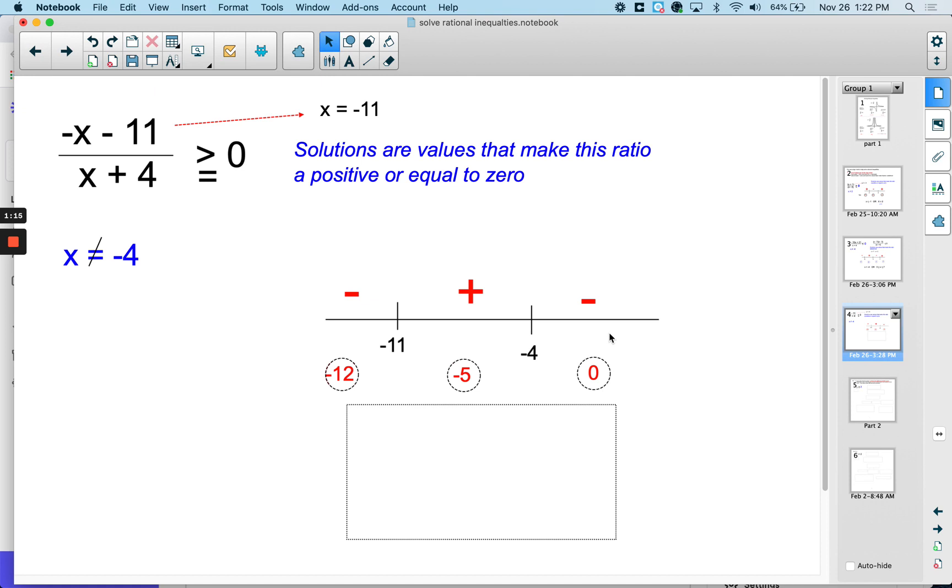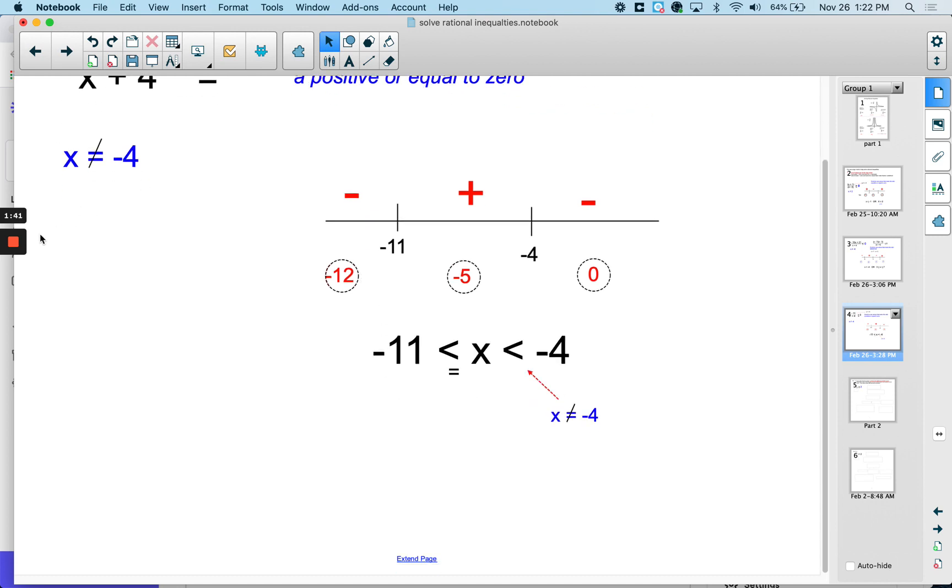So I'm looking for positive values, or greater than or equal to zero. So the negative 11 is included, because that's the numerator, but the negative 4 is not. So my solution would be x is greater than or equal to negative 11, but x is just less than negative 4, because we can't put the or equal to, because the ratio is undefined for x equals negative 4.